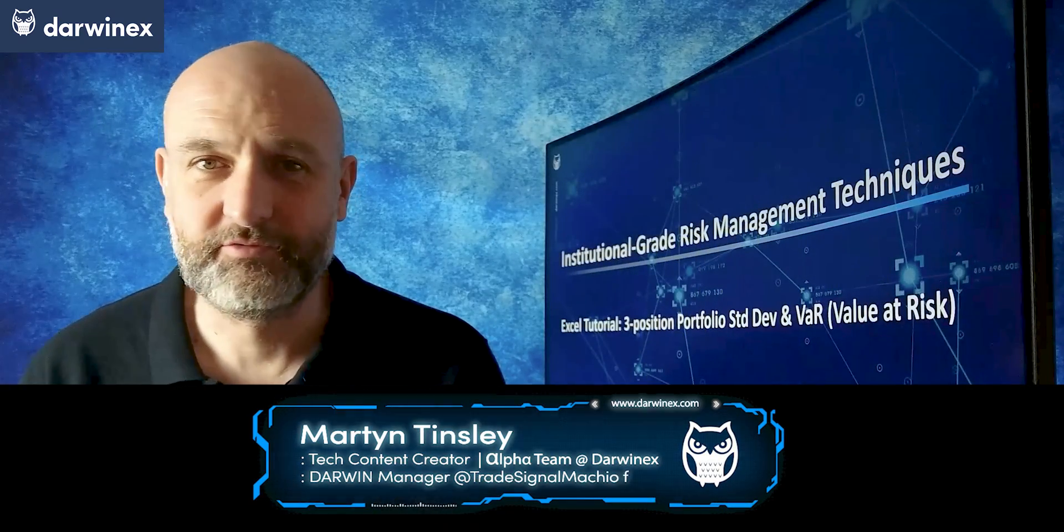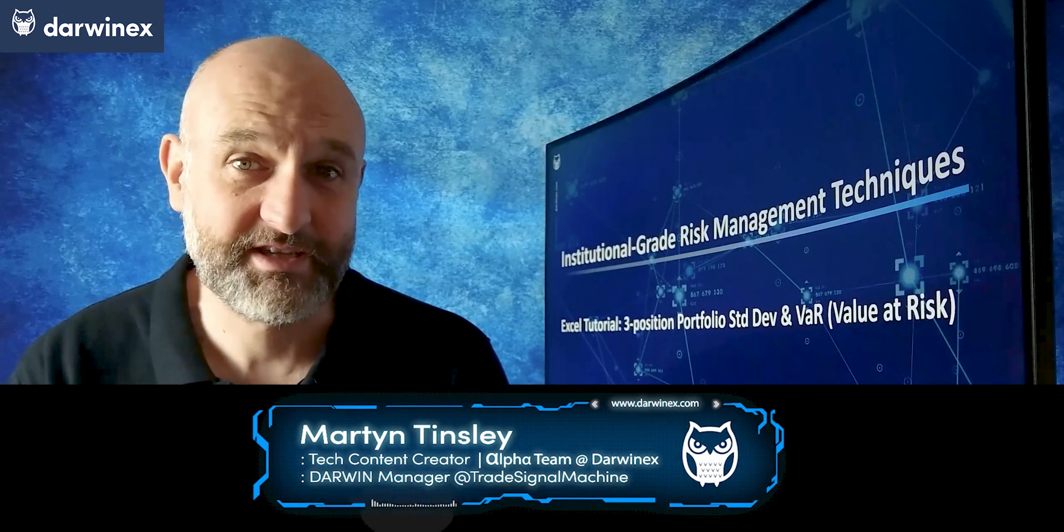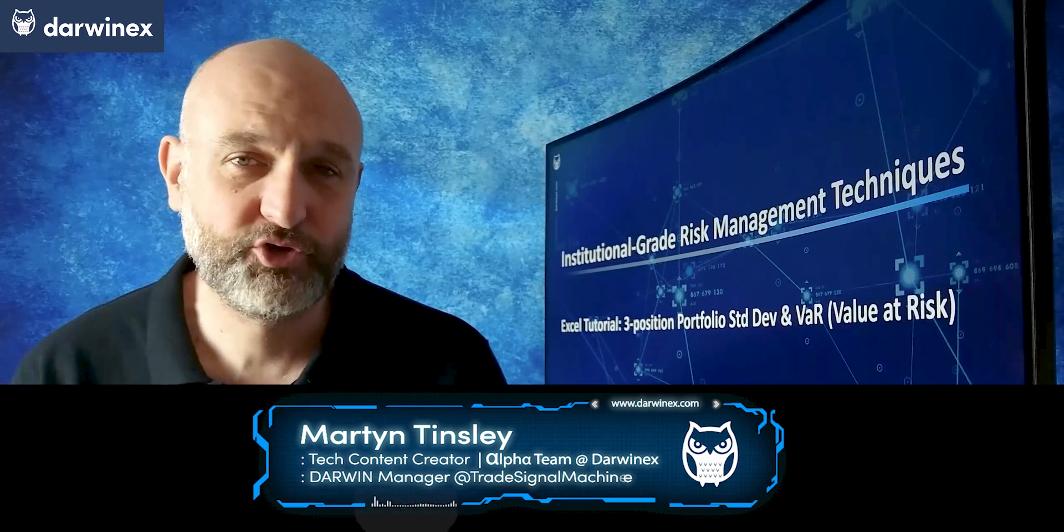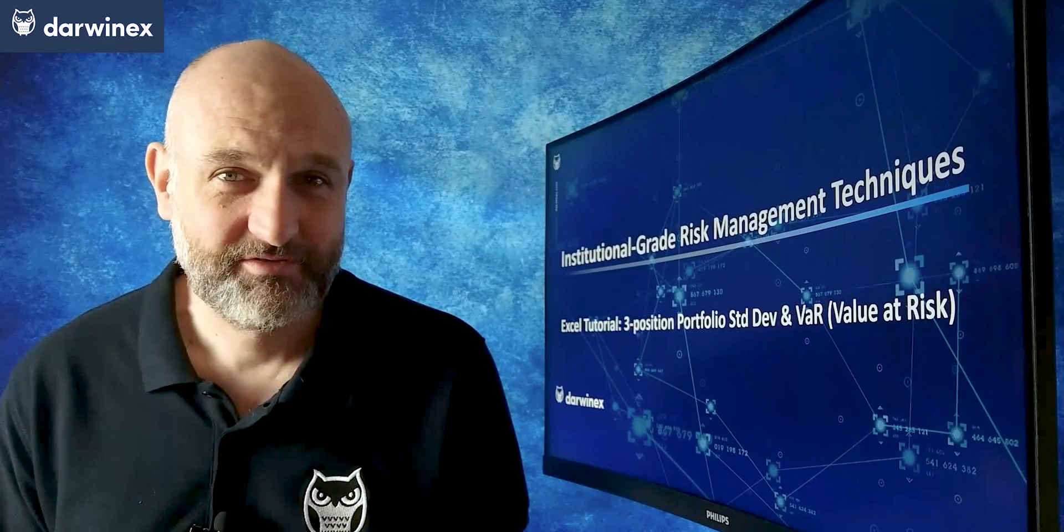If you search for tutorials to help you calculate the standard deviation of returns and the value at risk in Excel, almost all of these use just one or two assets. And of course, I showed this myself a few episodes ago as I was building up through the required knowledge. But just two positions isn't real world, right? What we really need to do is calculate it for any number of positions. And so today I go one step further than the vast majority of other tutorials and do this for three positions.